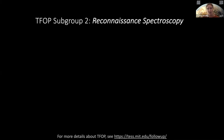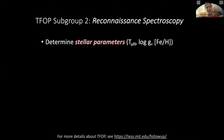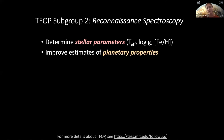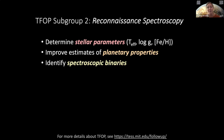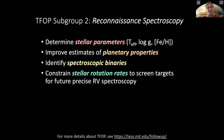Subgroup two does reconnaissance spectroscopy. What we do is take a spectrum of a star and use it to figure out the temperature, surface gravity, and metallicity of the star. This is important because we only know the properties of our planet as well as we know the properties of the host star, since we measure the planet's size relative to the host star. If we're looking for planets that might be habitable, we also want to know the temperature of the star so we can use the Stefan-Boltzmann law to estimate the equilibrium temperature of the planet. With subgroup two we can also identify spectroscopic binaries that can masquerade as transiting planets, and figure out how quickly the star is rotating, which allows us to identify which stars might be the best targets for high precision radial velocity observations.